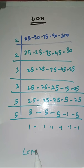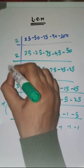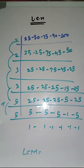So LCM of 25, 50, 75, 90 and 100 is equal to product of prime factors which is 2 into 2 into 3 into 3 into 5 into 5, which equals 900.